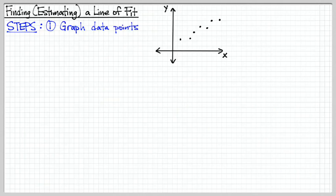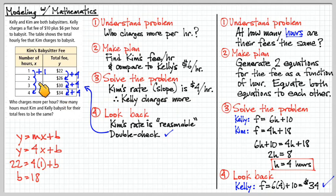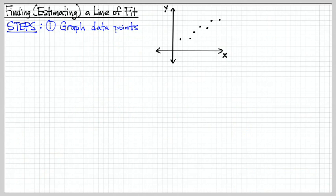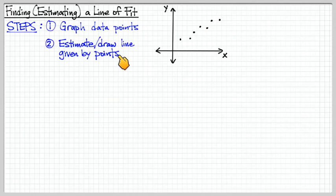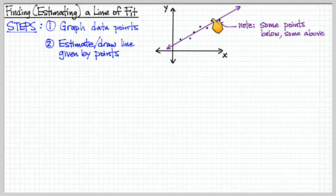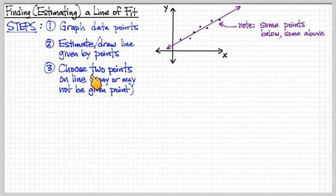This is another concept where a lot of times, in the previous example, these points here fell exactly on the line. But most of the time, when we gather scientific data, we graph the data, and it does not perfectly fall on the line. So what we want to do is what we call finding an estimate of the line of fit. So what we do here is we estimate. We do our best to draw a line through these given points. And really, it is your own estimation. We try to make sure that the line that we draw, there's kind of an equal number of points above and below that line.